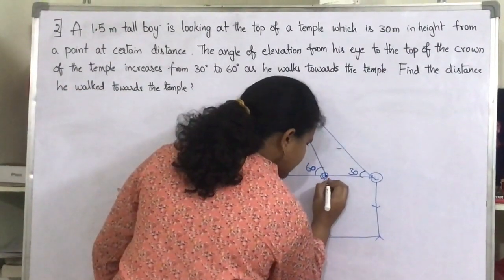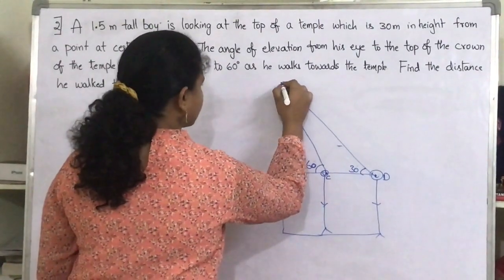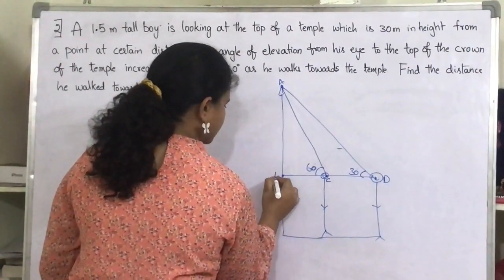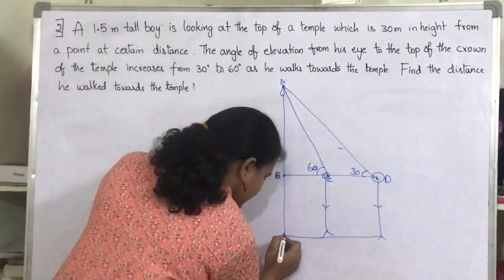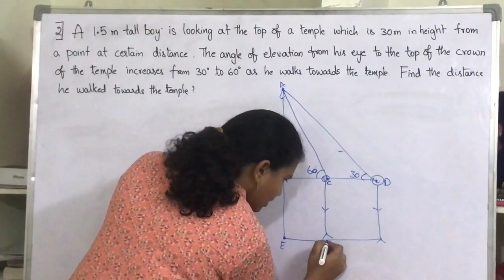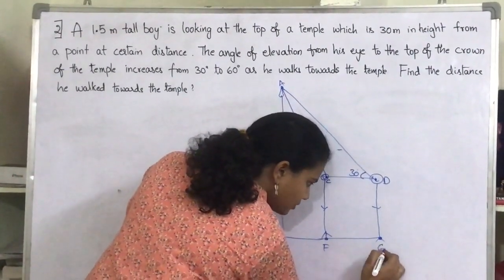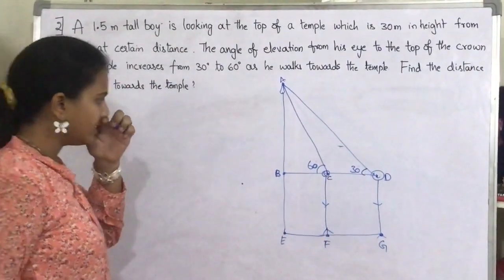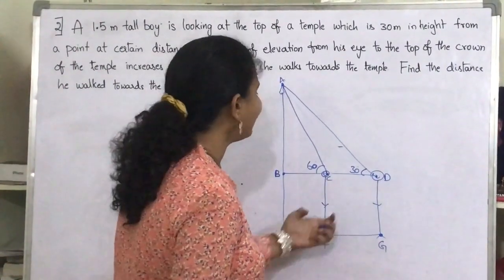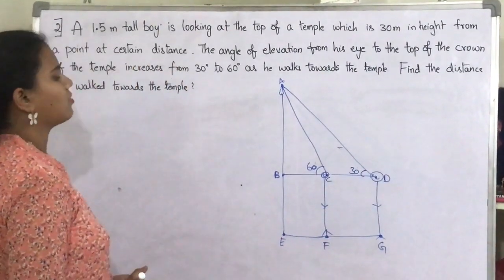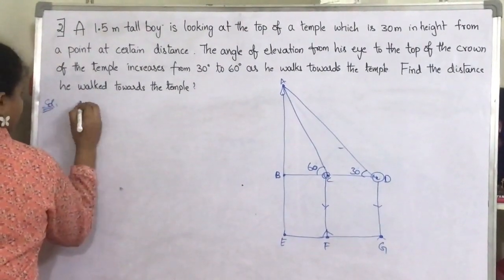Let's label the points: this point as C, this as D, this as A, this as B — so A, B, C, D — and let's make this point E. We need to find the distance, specifically the length of CD, which is the distance the boy walked towards the temple.